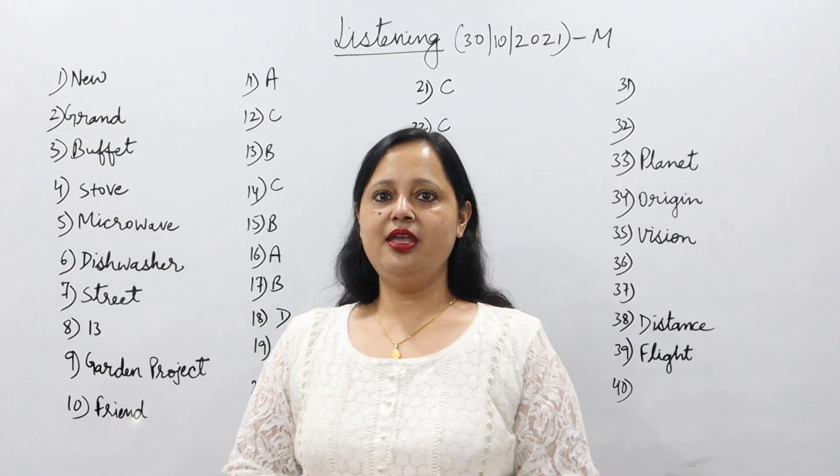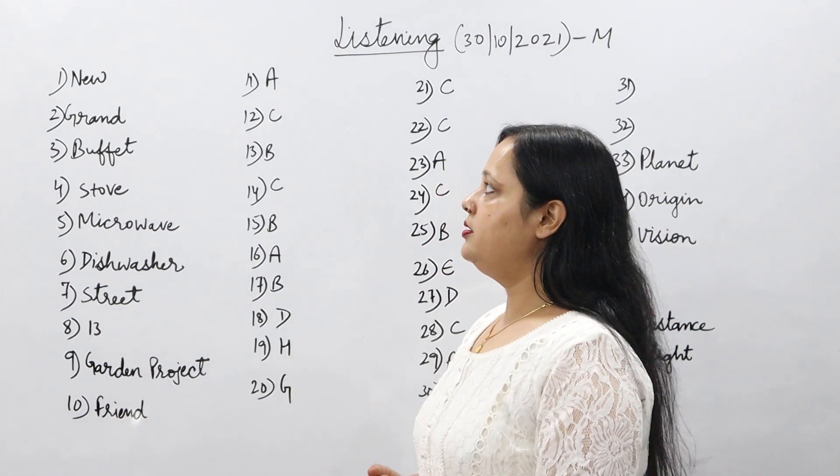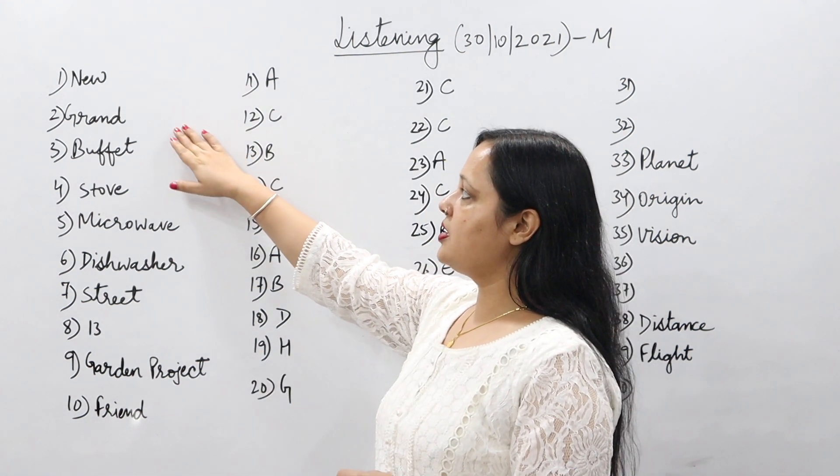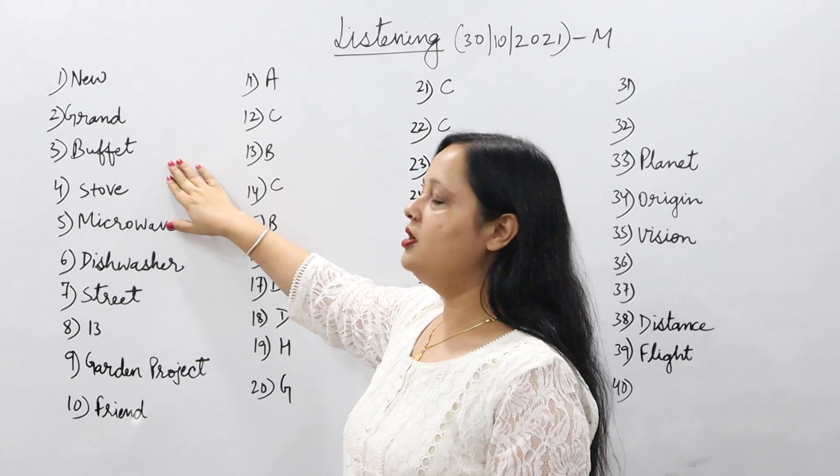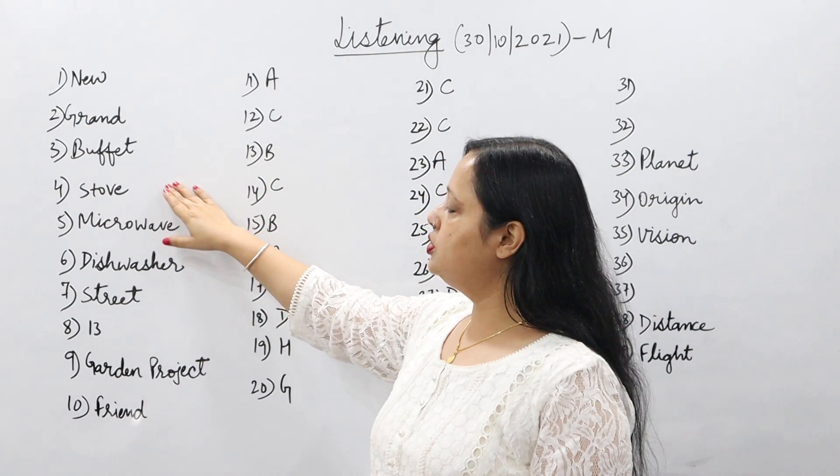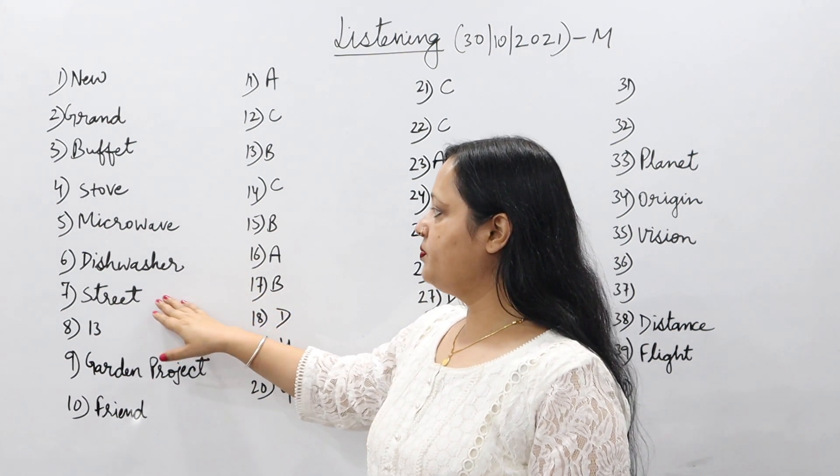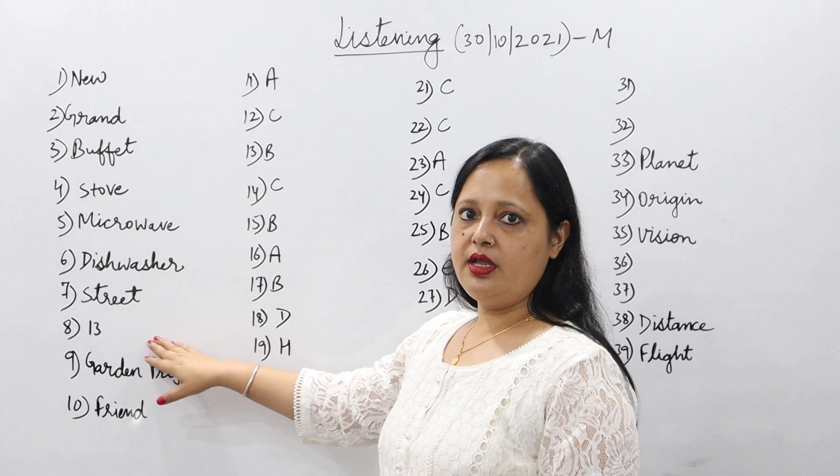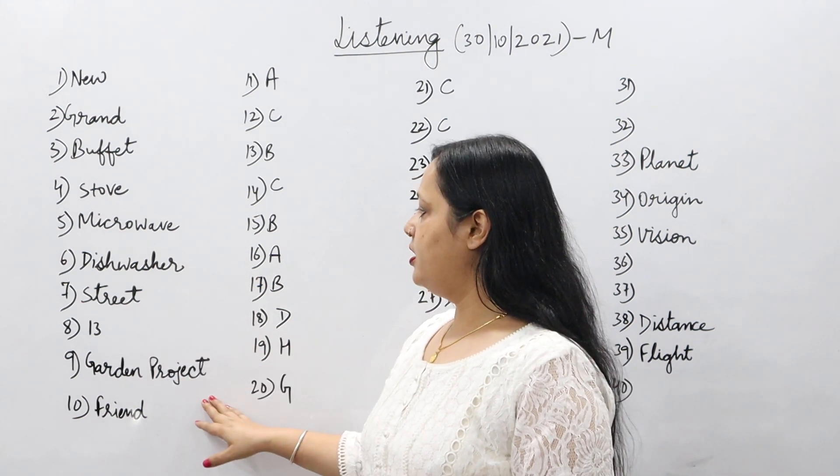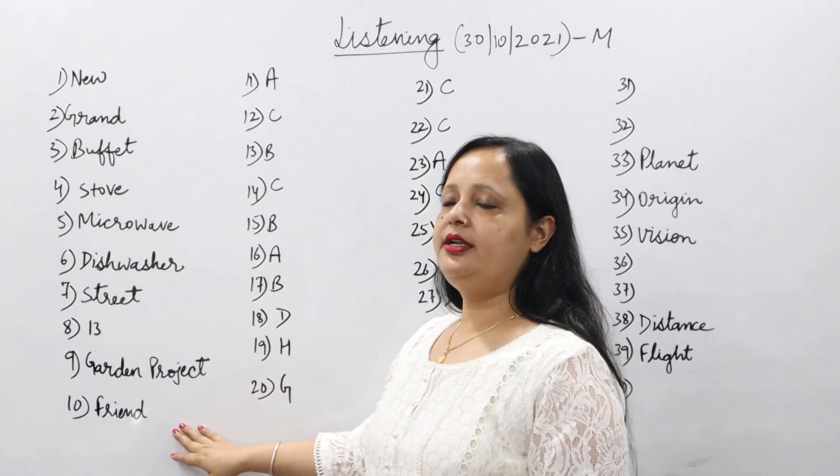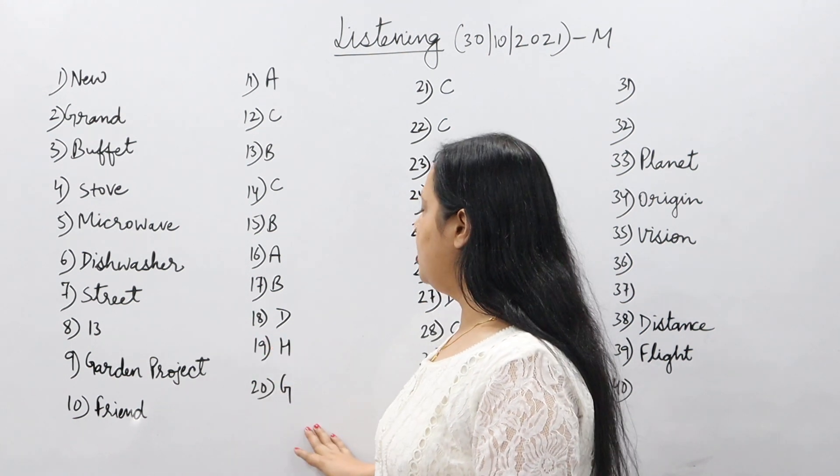Let's talk about Part 1. First was new, second grand, third buffet, fourth stove, fifth microwave, sixth dishwasher, seventh street, eighth thirteen, ninth is garden project, and tenth friend. Now Part 2.